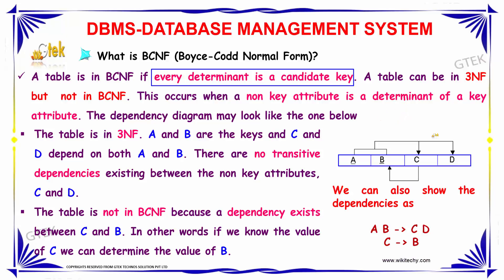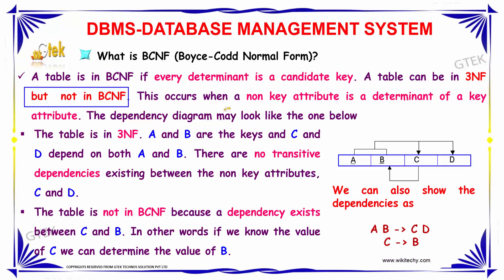A candidate key is nothing but two columns that have to be used in order to find the other value. A table can be in third normal form but not in BCNF — that is possible. A table in third normal form does not necessarily have to be in BCNF. This occurs when a non-key attribute is a determinant of a key attribute.